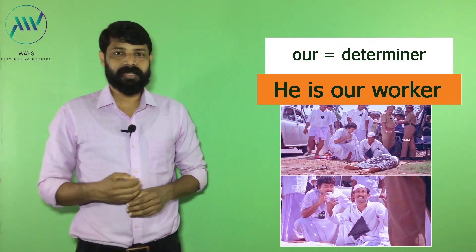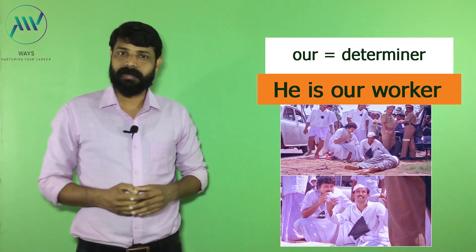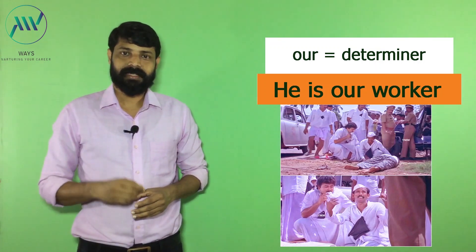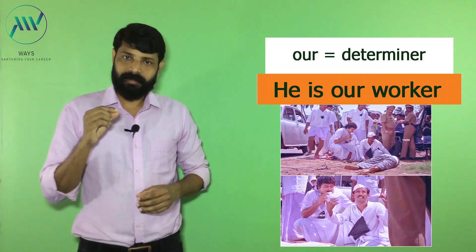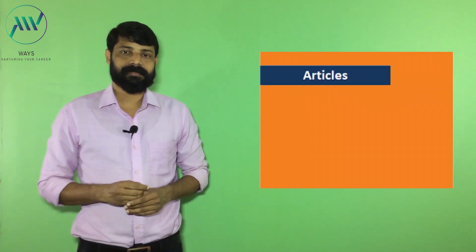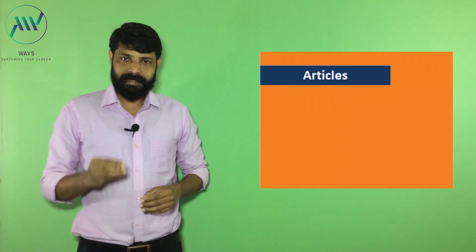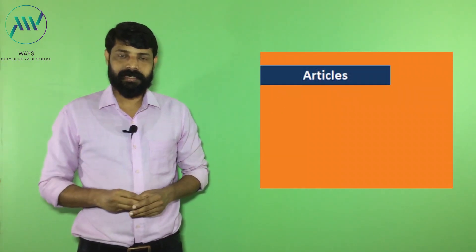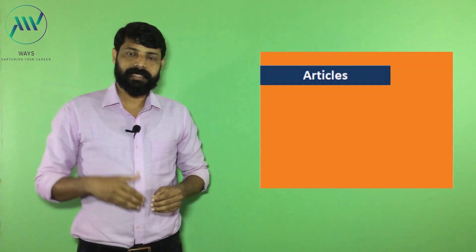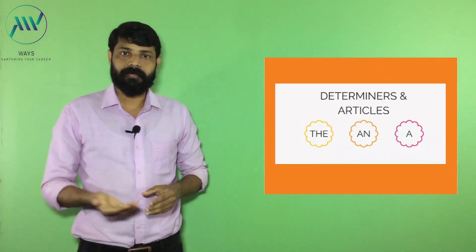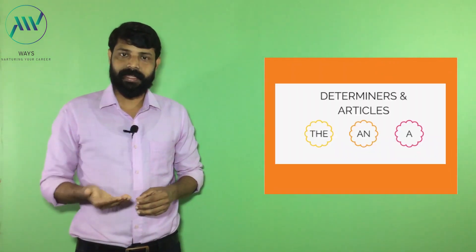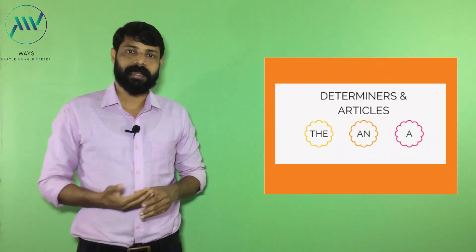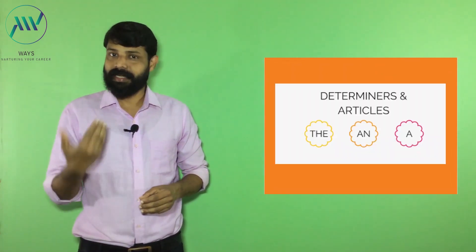Now we can talk about our four types of determinants. First one: articles. In this situation, determinants come in the form of articles. Both definite and indefinite articles are determinants.